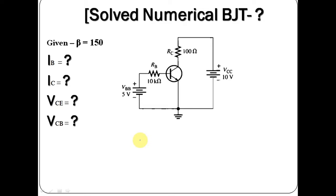Hello friends, welcome to Electronic Circuit Hub. Today we are going to solve this numerical on BJT. This is basically a common emitter configuration. Here we have to find the value of IB, IC, VCE, and VCB. You already know the value of beta, which is basically the current gain.